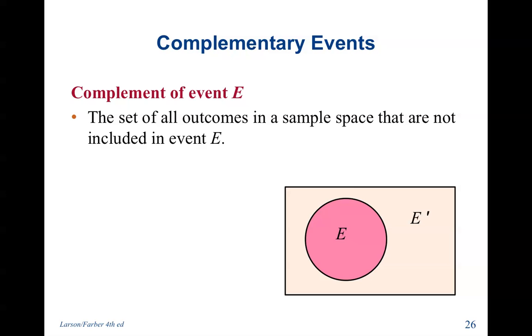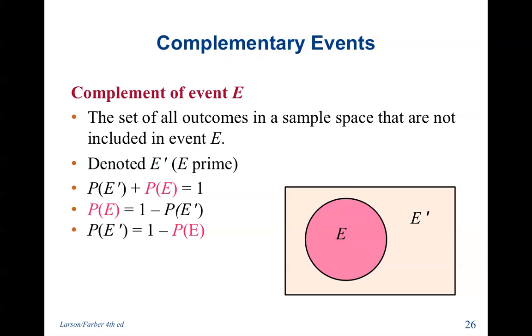Complement of E. The set of all outcomes in a sample space that are not included in event E. So if this is E, everything else would be the complement of it. It's denoted by E prime. And if you add all the outcomes with all the outcomes not in it, you would get 100% or 1. So the probability of an event could also be 1 minus all the other choices that are not in it. Sometimes it might be easier to find that instead of the other way around. The probability of E prime is equal to 1 minus the probability of all events. They're complements of each other. If you are given this circle, then I can say 1 minus this circle to find all this other stuff out here. Vice versa, if I'm given the rest of this space right here and I subtract it, what am I left with? Just the circle.